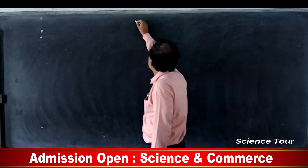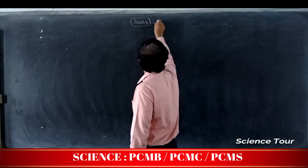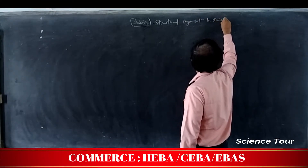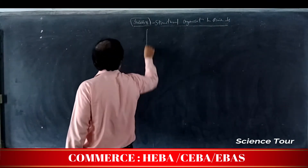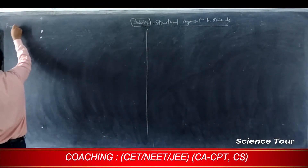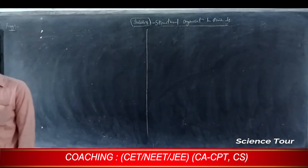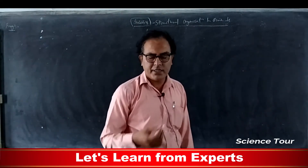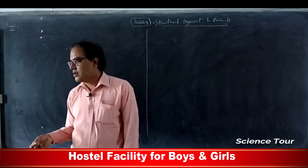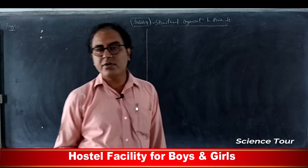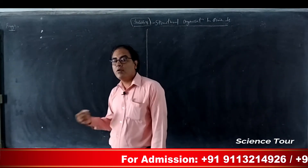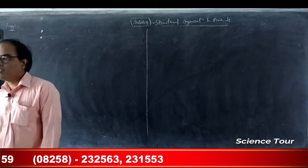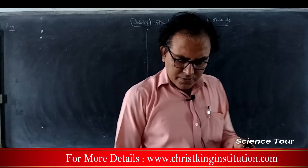Dear students, welcome back to biology online classes. The chapter we are discussing is all about structural organization in animals. We will start with the next topic, which is the frog. The frog can live on both land as well as on water, so they are called amphibians. They are the first vertebrates to lead life on land. Exclusively terrestrial vertebrates evolved next to amphibians — those are the reptiles.